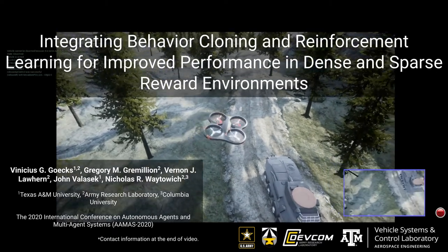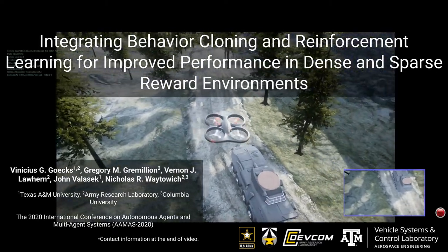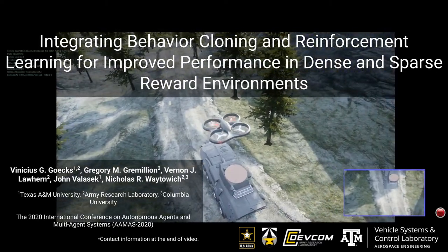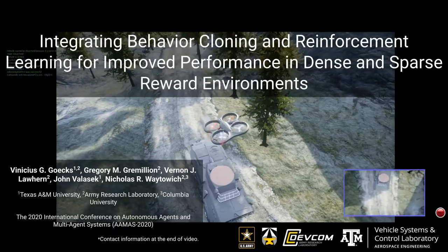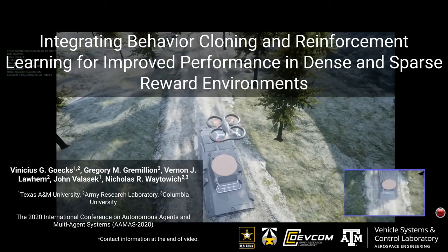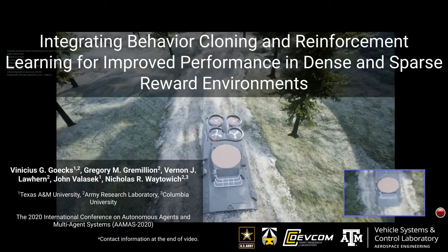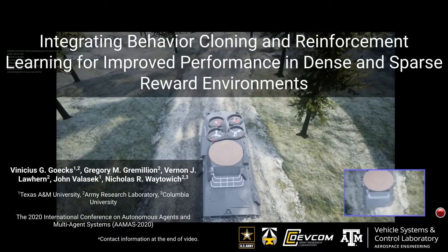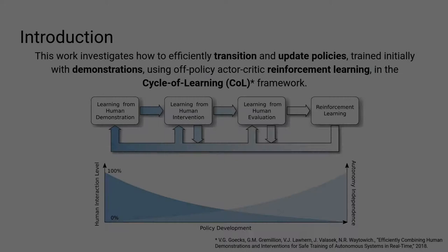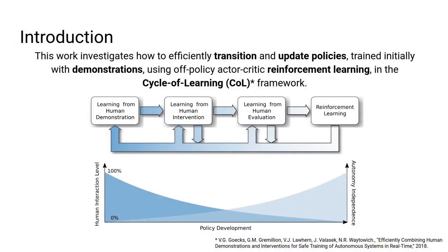This work presents an approach to transition from policies learned from human demonstrations to reinforcement learning using an actor-critic architecture. Our approach, the Cycle of Learning, integrates learning from multiple human interaction modalities to reinforcement learning.